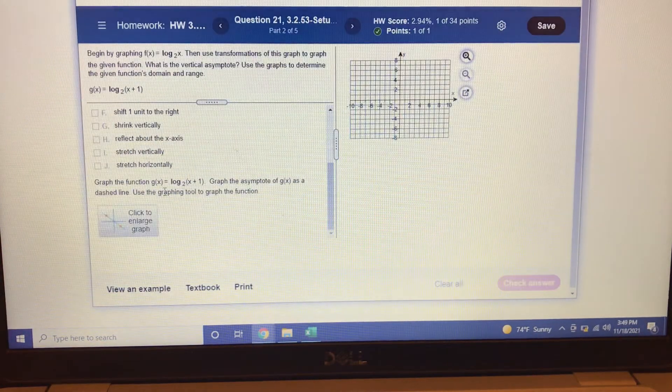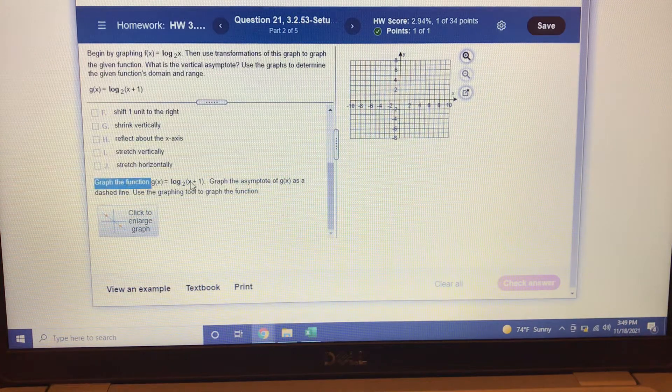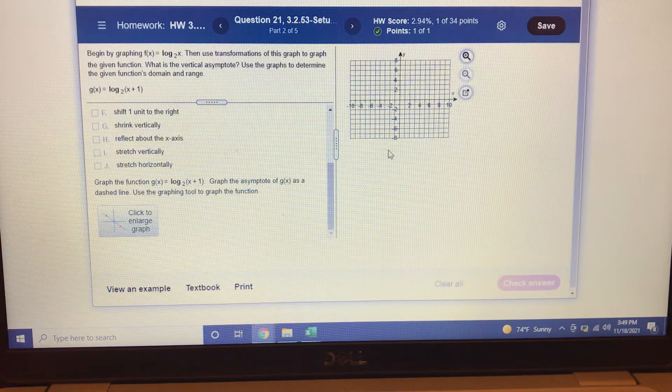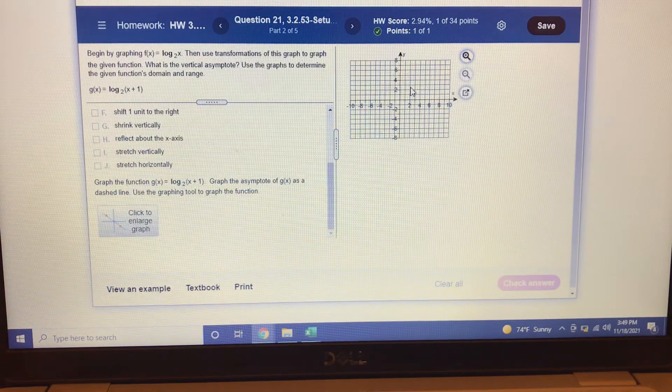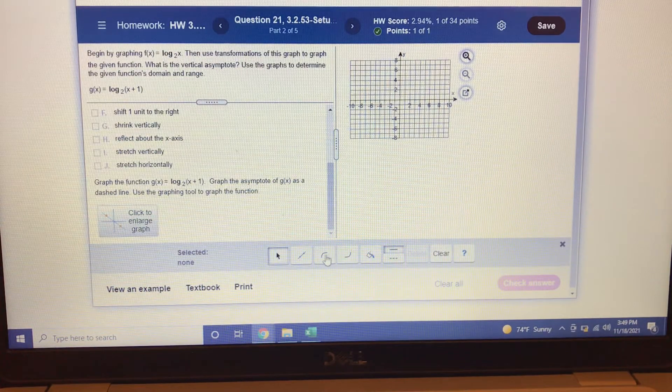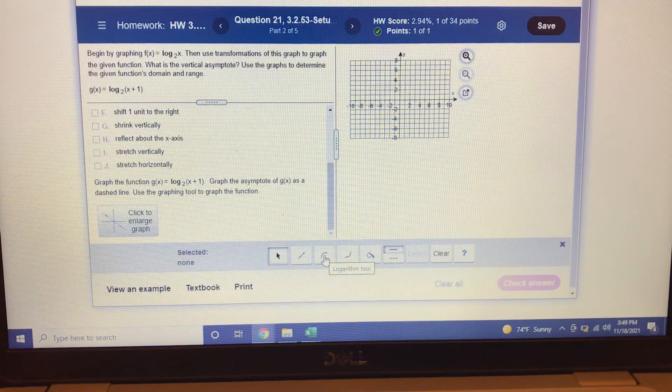Alright, now they want us to graph it. Graph the function, also graph the asymptote. Okay, so here's the graph. We're going to click on the graph, and it's going to have some options pop up down here. Right, and we want to find the logarithm right here. See it says logarithmic tool. Click on that.